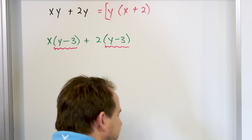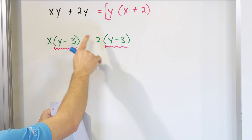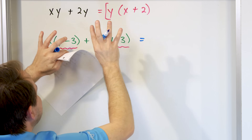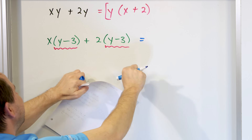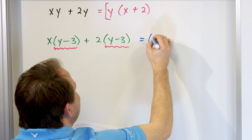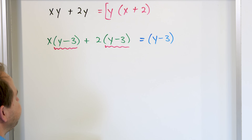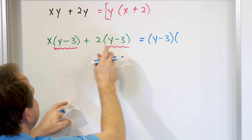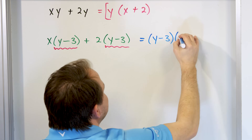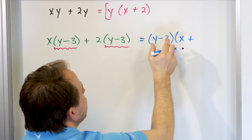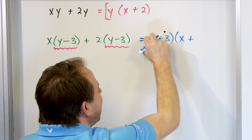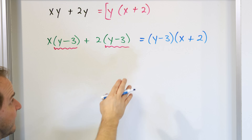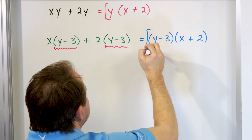Factoring by grouping oftentimes means pulling out large terms that happen to be common to both. Just like we pulled out the y before, I can pull out (y - 3), which is common to both terms. I wrap it in parentheses, say (y - 3) gets pulled out, then open another parentheses: (y - 3) times x gives the first term, plus (y - 3) times 2 gives the second. So the factored form is (y - 3)(x + 2), and this is the final answer.